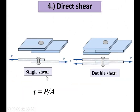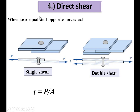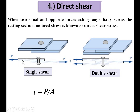Now, fourth: direct shear stress. This figure shows a rivet joint, where the rivet connects two plates. If a load is applied, the rivet will shear off. This is called single shear — shearing at only one place. In double shear, the rivet shears off at two planes. Definition: when two equal and opposite forces acting tangentially across the resisting cross-section are applied on a body, the induced stress is known as direct shear stress.